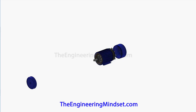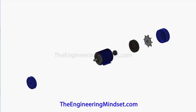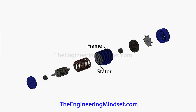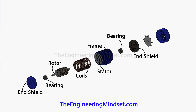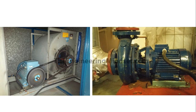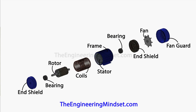If we took a typical induction motor and pulled it apart, these are the main components we'd see inside. First we have the main body or frame, which is bolted down onto the floor or onto a frame. The main frame is where everything is bolted into and connected to — it's the central reference point and also the housing for the stator, which fits inside it.